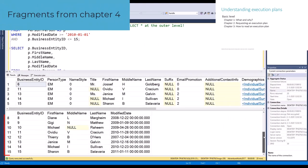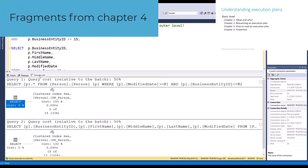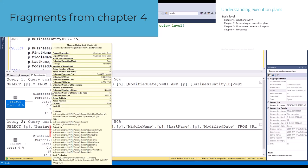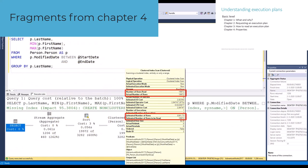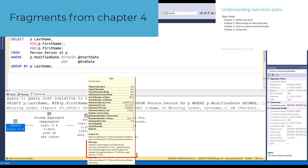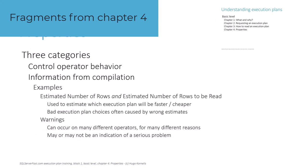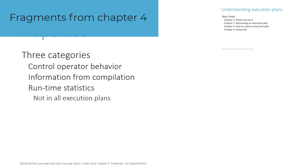Chapter 4 introduces you to properties. They are not directly visible in the graphical representation of execution plans, but they can be easily accessed. And you should access them, because the properties provide a wealth of information. There are three broad categories of properties: those that control details of how an operator behaves, those that provide information about the compilation process, and those that show runtime counters after a query has completed.